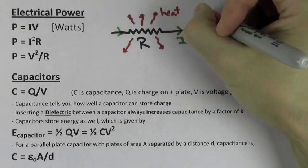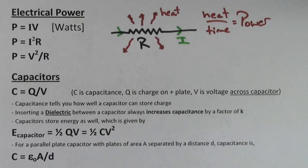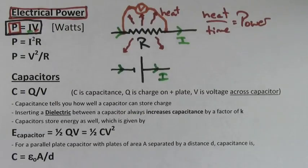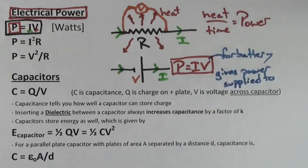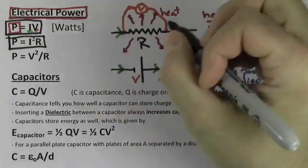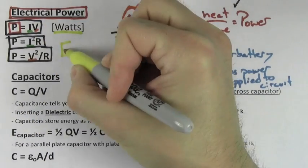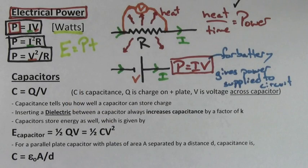The amount of heat a resistor gives off per time is its power. To find the power used by a resistor, multiply the current through that resistor by the voltage drop across that resistor. P equals IV also works for a battery, but this time it tells you the total power the battery supplies to the circuit. Plugging Ohm's law into P equals IV, you can also get the form I squared R or V squared over R for the power used by a resistor. Power, as always, is measured in watts, and you can find the energy used by the resistor by multiplying the power times the time.